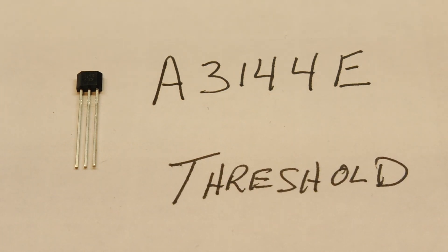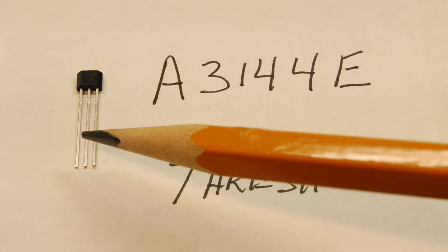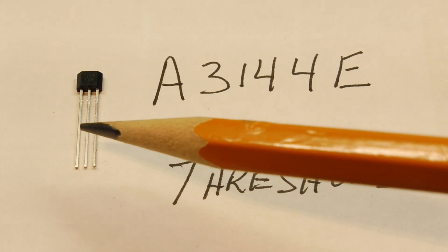In this video we're going to talk about Hall effect switches. And we're going to look at two different types of Hall effect ICs. Now the one we see here is a threshold Hall effect switch and the part number is A3144E. It's a three terminal device, comes in a TO92 package.